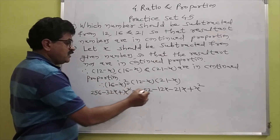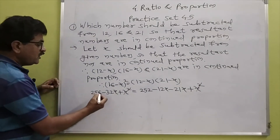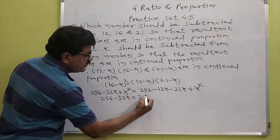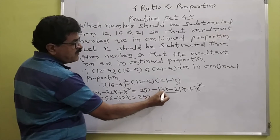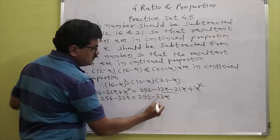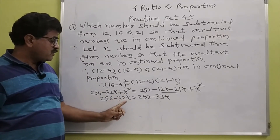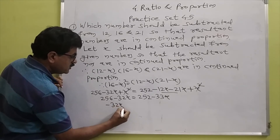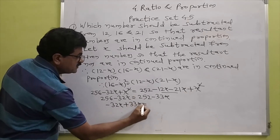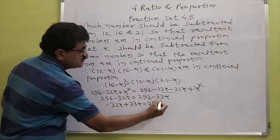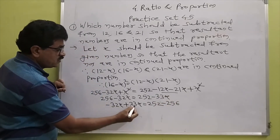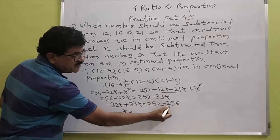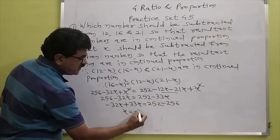Plus X squared cancels on both sides. Now 256 minus 32X equals 252 minus 33X. Taking terms of X to the left-hand side: minus 32X plus 33X equals 252 minus 256. So X equals 252 minus 256, that is minus 4.